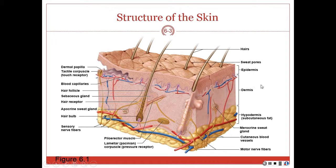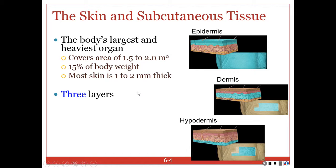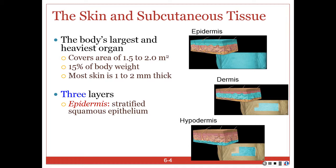The skin is the body's largest and heaviest organ. It covers approximately 1.5 to 2.0 square meters and accounts for approximately 15% of the body's weight. Most skin is 1 to 2 millimeters thick. I mentioned the layers of the skin — the epidermis is shown here; you can follow along in your textbook at figure 6.1.